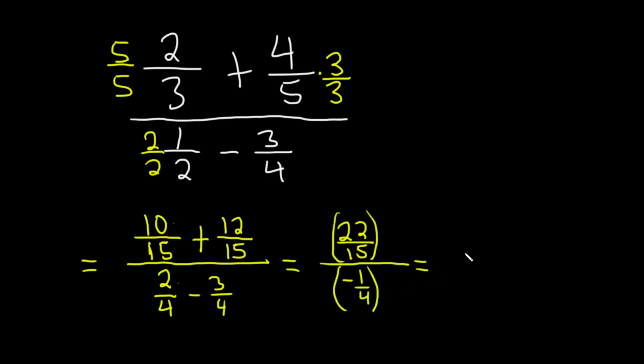Division is multiplication by the reciprocal, so this is 22 over 15. Again, division is multiplication by the reciprocal, so times the reciprocal of negative one over four is simply negative four over one. You can leave the negative there. It doesn't matter where you put the negative.